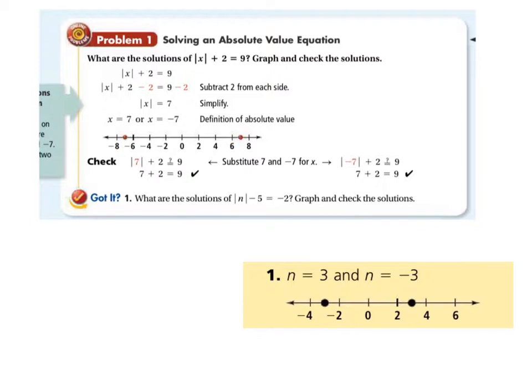And the check, right? Plug in 7, plug in negative 7. So here what are the solutions of the absolute value of n minus 5 equals negative 2.